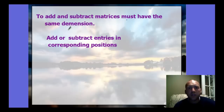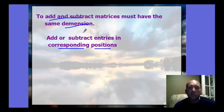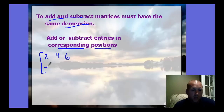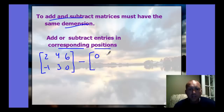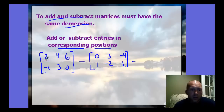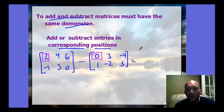To add and subtract matrices, they must have the same dimension. You add or subtract the entries in the corresponding positions — that's why the dimensions must be equivalent. For example, subtracting a second 2×3 matrix from the first: position row 1, column 1 gives 2 minus 0, which equals 2. Row 1, column 2 gives 4 minus 3, which equals 1.